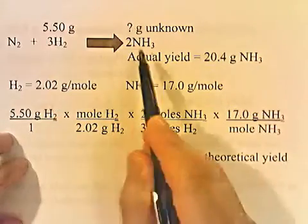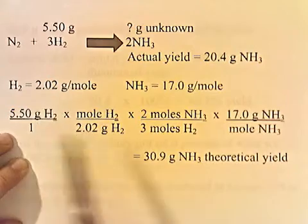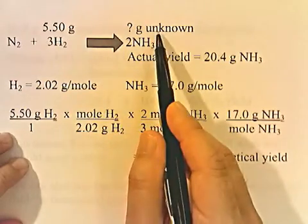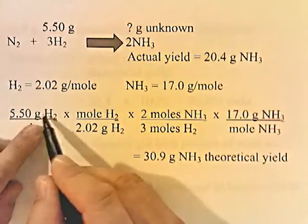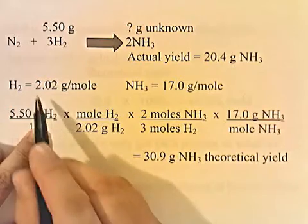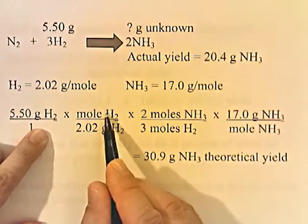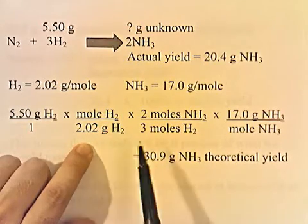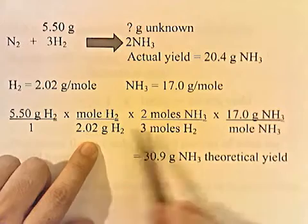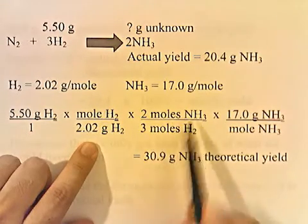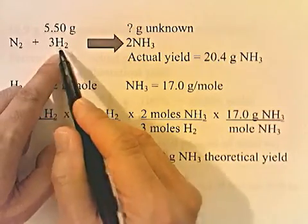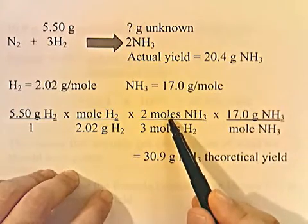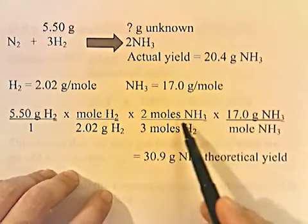We have our known and our unknown. One mole of the known (H2) weighs 2.02 grams; one mole of the unknown (NH3) weighs 17 grams. Starting with 5.50 grams of H2, I put 2.02 grams of H2 on the bottom and one mole of H2 on top to convert grams of H2 into moles of H2. Then to convert moles of H2 into moles of NH3, I put three moles of H2 on the bottom and two moles of NH3 on top, because three moles of H2 are required to produce two moles of NH3.